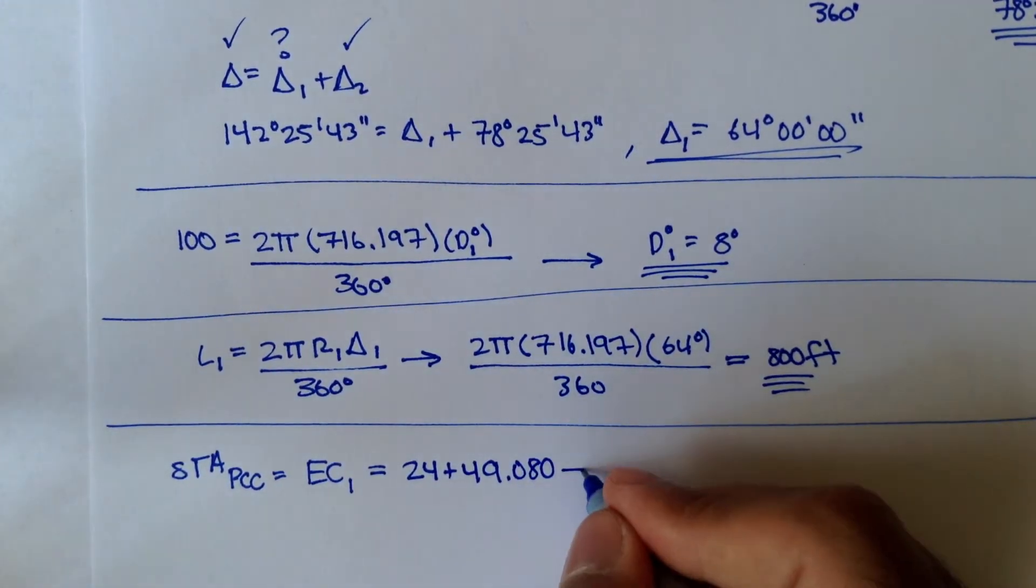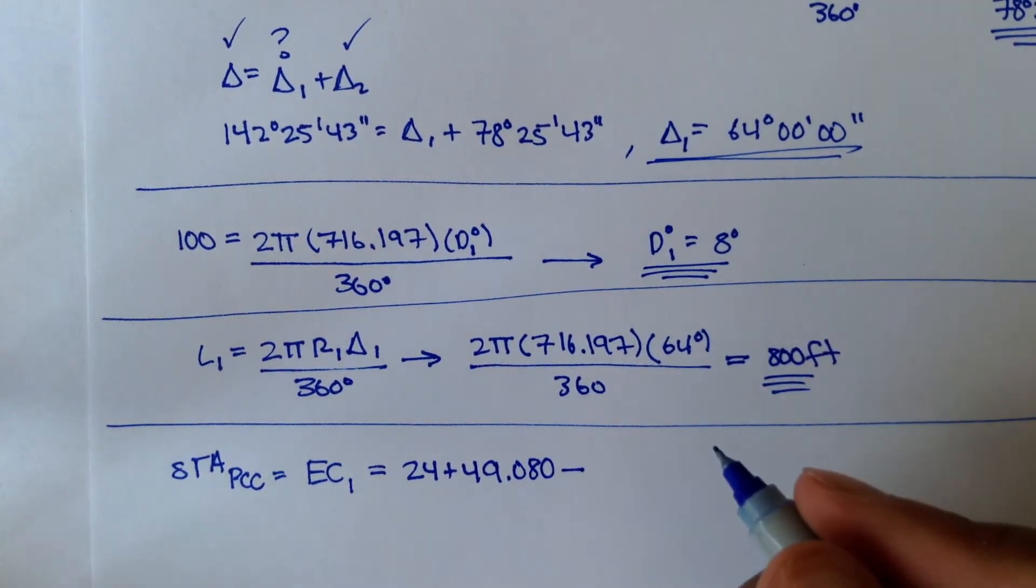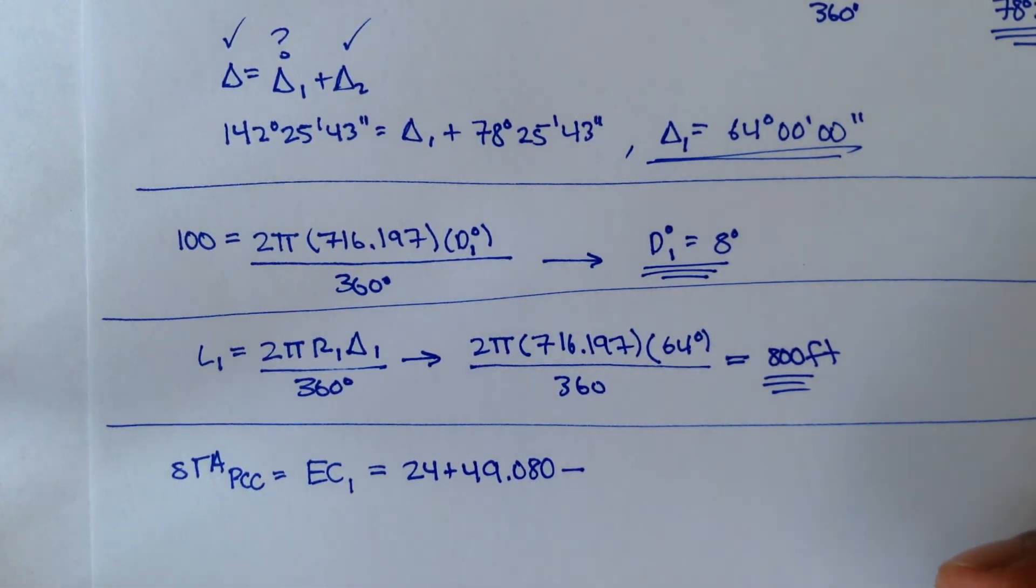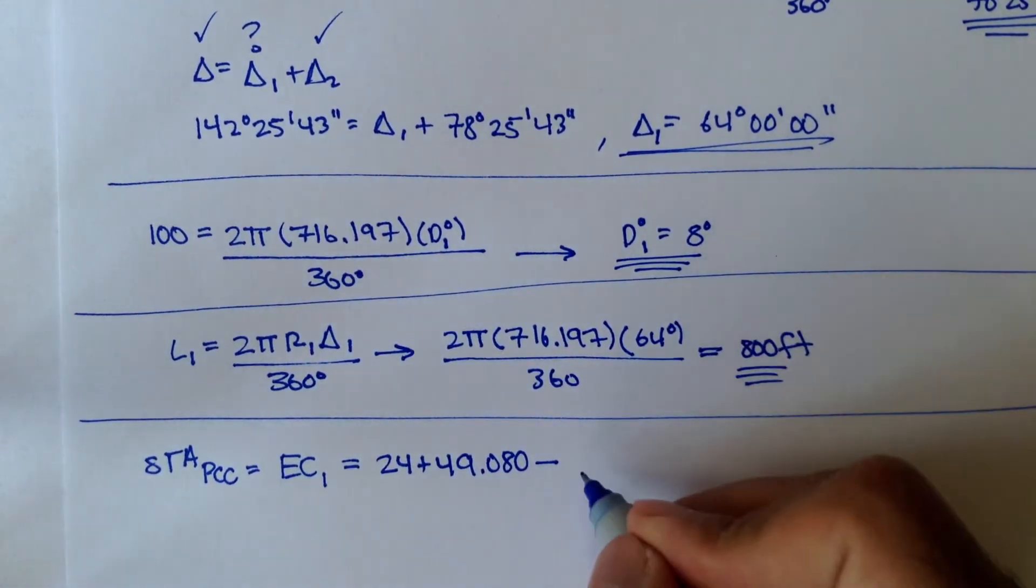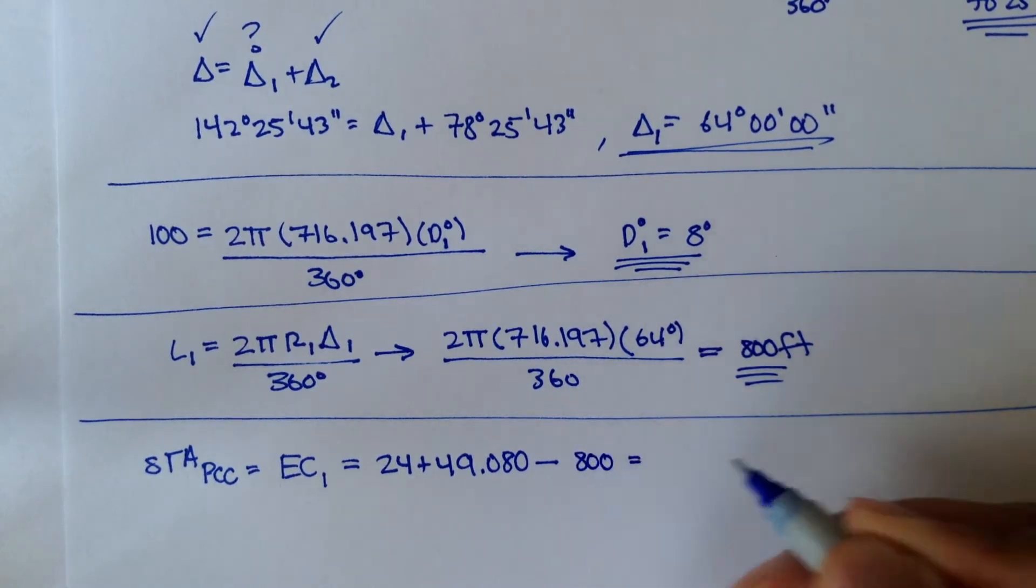From that, we need to subtract the length of the curve. And the length of the curve is, for curve 1, we actually figured out up here is 800 feet.